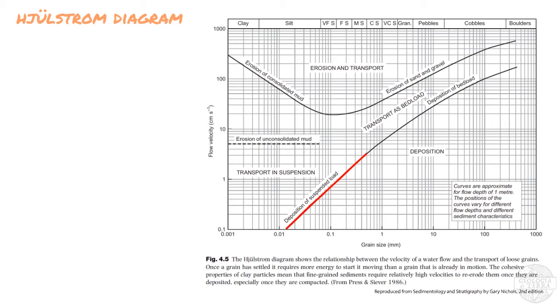The lower line shows the relationship between flow velocity and movement of particles that are already in motion. Above the line there will be transport, and below there will be deposition.